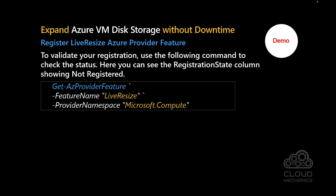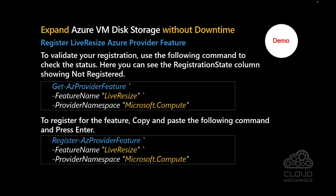Now let's proceed with the demo of registering our live resize Azure provider feature. First we validate whether the Azure provider feature is registered using the Get-AzProviderFeature command with the feature name and provider namespace Microsoft.Compute. If it is not registered, we use the Register-AzProviderFeature command with the feature name 'LiveResize' and the provider namespace Microsoft.Compute to register it.